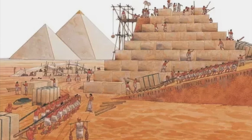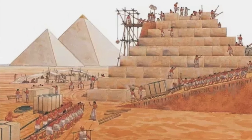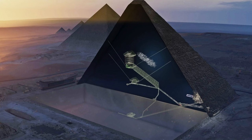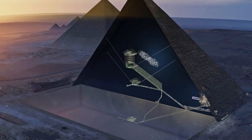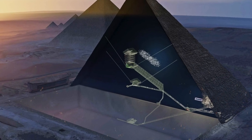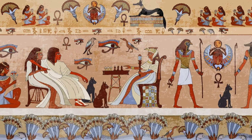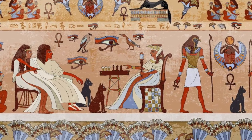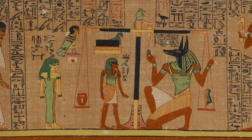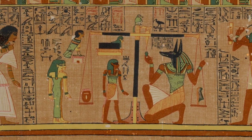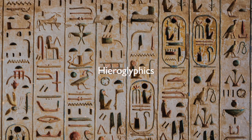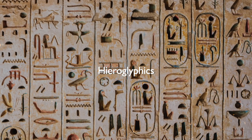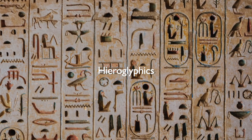The construction of pyramids such as the famous Great Pyramid of Giza was a testament to the pharaoh's power and their connection to the afterlife. But the Old Kingdom was not just about monumental architecture — it was also a period of artistic and literary flourishing. The Egyptians developed hieroglyphics, a writing system that used pictures to represent words and ideas.